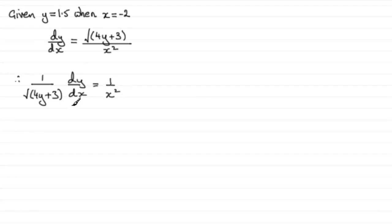Then if I remove this dx and put it over this side, I end up with 1 over the root of 4y plus 3 dy equals 1 over x squared dx. At this stage I integrate both sides.